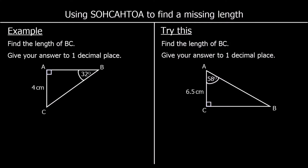We can use SOHCAHTOA to find a missing length in a right-angle triangle when we know one of the other angles and one of the other lengths. In this first question we're asked for the length BC, which is the hypotenuse. We need to decide if we're using sin, cos, or tan — that depends on which lengths are in the question. So let's label this triangle. The hypotenuse is the longest side opposite the right angle. The opposite is opposite the angle we're using. And the adjacent is in between the angle and the right angle.